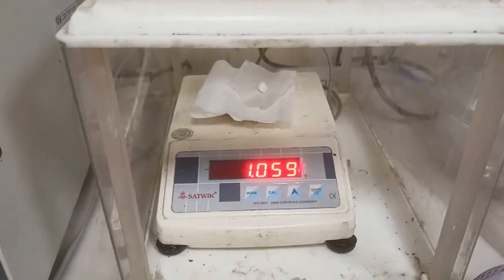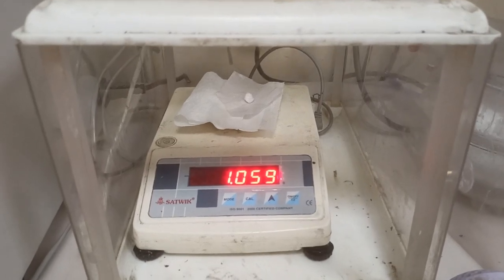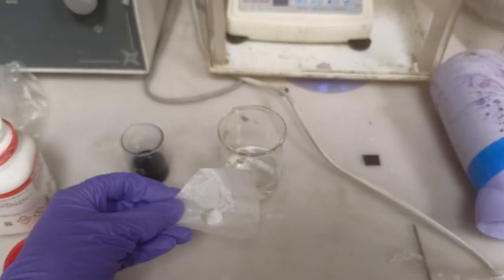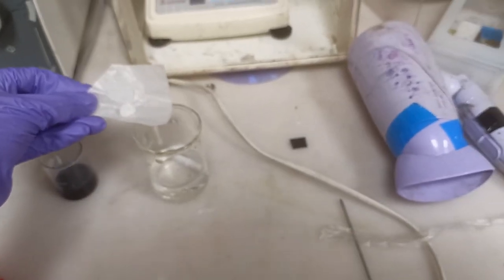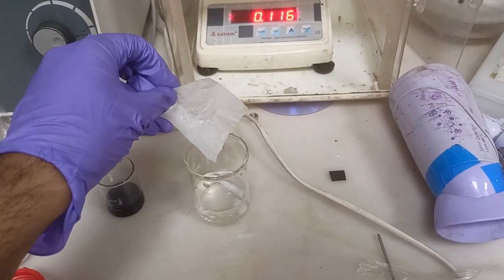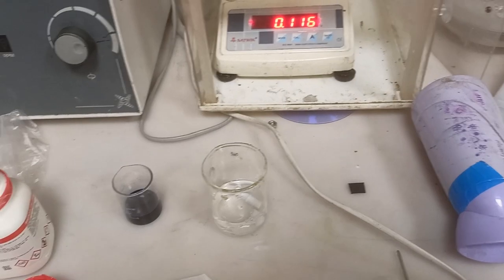We are going to take 1 gram of tin chloride. It is from Sigma Aldrich but you can use any other tin chloride, no issues. I am going to add 1 gram of tin chloride into this 40 ml of water and then stir it.